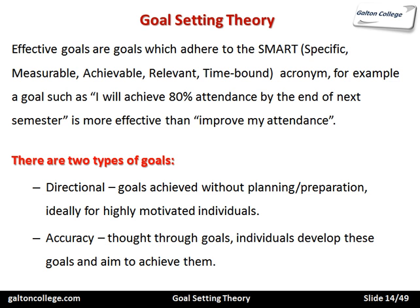The second type of goal is related to accuracy — thought-through goals. Individuals develop these goals and aim to achieve them. They're well thought through, planned in detail, and individuals adopt them and try to work with them to achieve the overall objective.